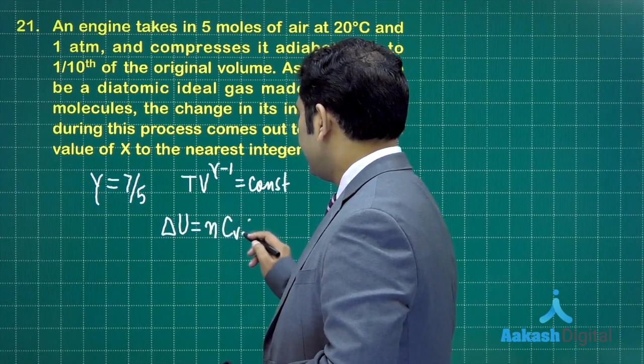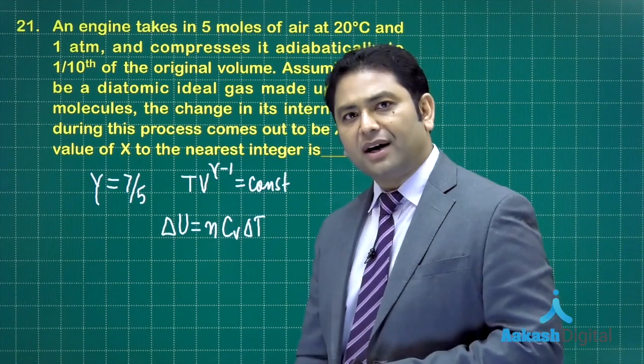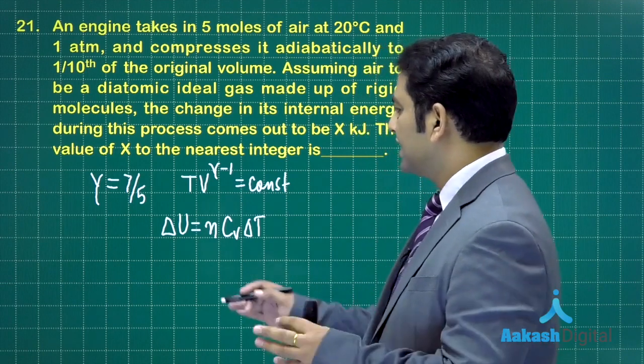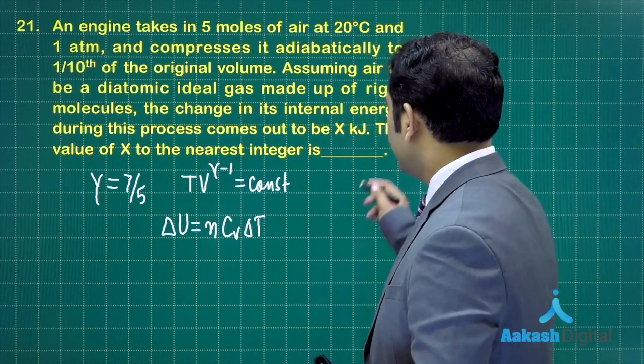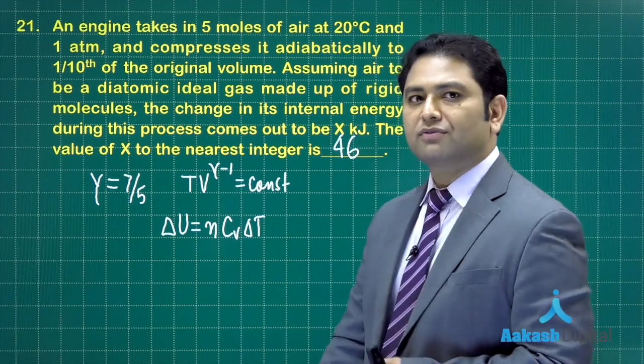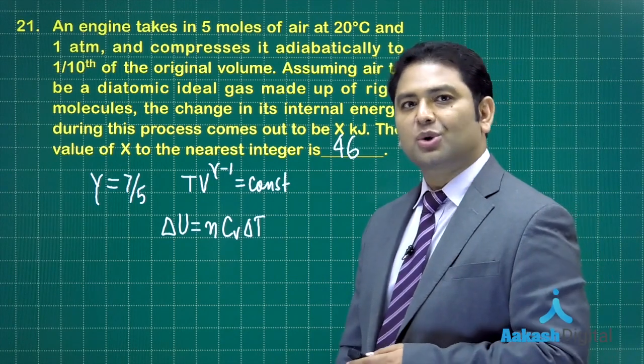After that, calculate the change in internal energy, which is n times Cv times delta T, where Cv is R divided by gamma minus 1. On doing this you would get the value as 46 kilojoules. Therefore, the correct answer for question number 21 would be 46. Now let's go for question number 22.